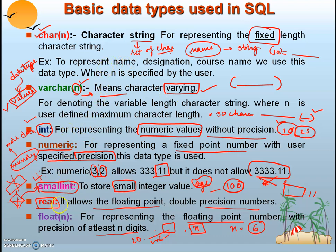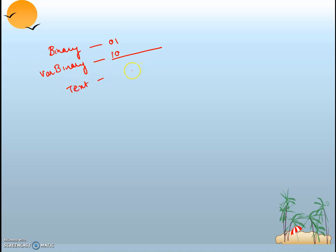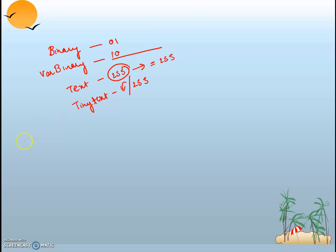The basic SQL data types are: CHAR, VARCHAR, INT, NUMERIC, SMALLINT, REAL, and FLOAT. Apart from these, there are additional types: BINARY, which allows only zeros and ones; VARBINARY, which allows variable-length binary data; TEXT, which holds a string of maximum 255 characters; and TINYTEXT, which is similar to SMALLINT and also holds strings up to 255 characters, and can allow values below 255 as well.